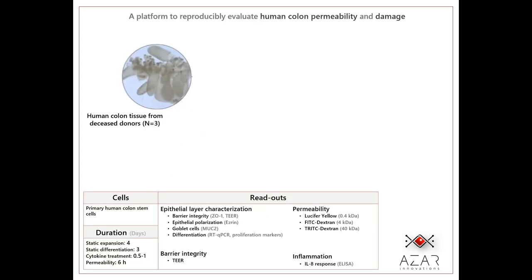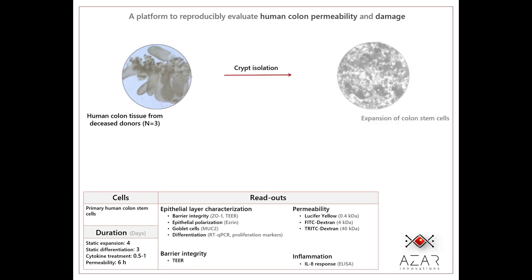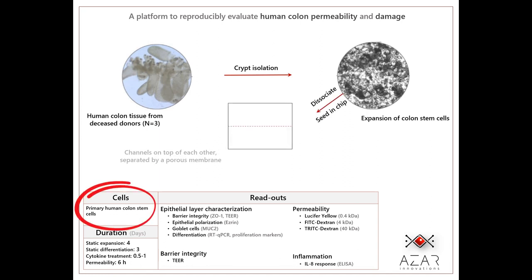They start with human colon tissue from three donors, then isolate the crypts and stem cells and expand them to get enough colon spheroids. Next is dissociation of the spheroids to cell aggregates to seed in an organ chip.